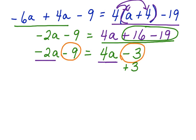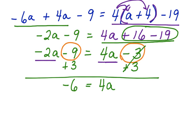We do the inverse, which is to add 3. And we move that over. Negative 3 plus 3 cancels. Bring down the 4a. Equals negative 9 plus 3, which is a negative 6. Bring down the negative 2a.